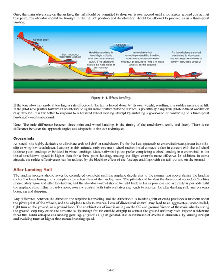Note: the only difference between three-point and wheel landings is the timing of the touchdown — early or later. There is no difference between the approach angles and airspeeds in the two techniques. Crosswinds: it is highly desirable to eliminate crab and drift at touchdown. By far the best approach to crosswind management is a side slip or wing-low touchdown. Landing in this attitude, only one main wheel makes initial contact, either in concert with the tailwheel in three-point landings or by itself in wheel landings. Many tailwheel pilots prefer completing a wheel landing in a crosswind, as the initial touchdown speed is higher, making the flight controls more effective. In addition, in some aircraft, rudder effectiveness can be reduced by the blocking effect of the fuselage and flaps with the tail low and on the ground.